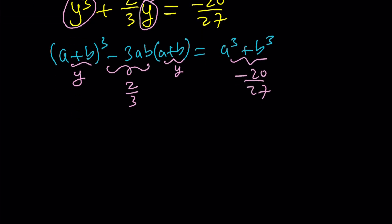If negative 3ab is two thirds multiply both sides by negative one third you're going to get ab equals negative 2 ninths. Great. And then a cubed plus b cubed equals negative 20 over 27. We kind of got like two equations. Is that a cubic system? No.